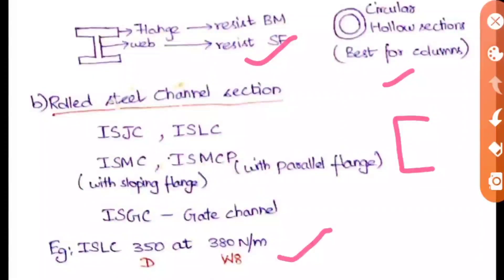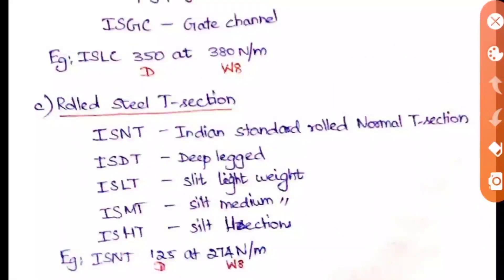For rolled steel T-sections: ISNT is Indian Standard Rolled Normal T-section, ISDT is Duplex section, ISLT is Light Weight, ISMT is Medium Weight, and ISHT is Heavy section. T-sections are also represented with depth and weight.